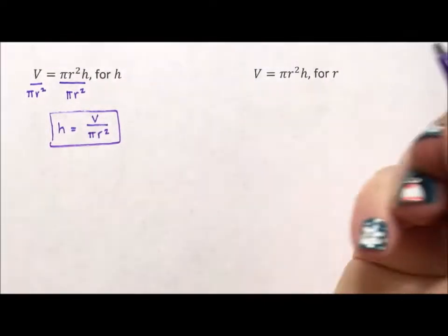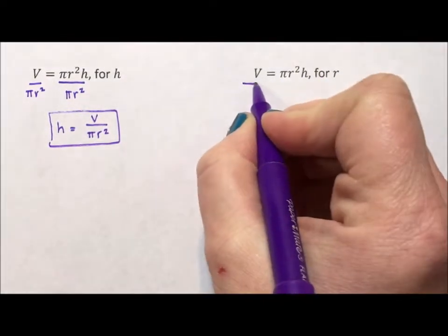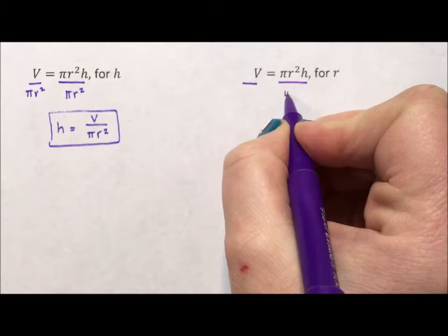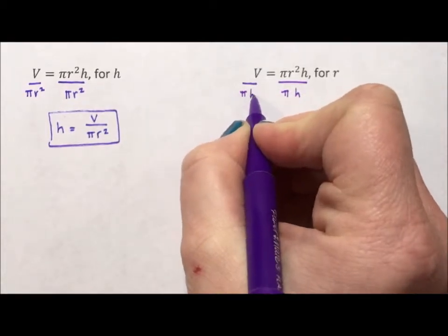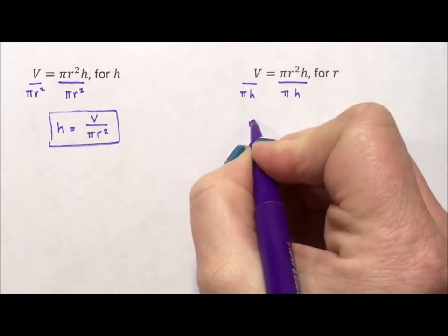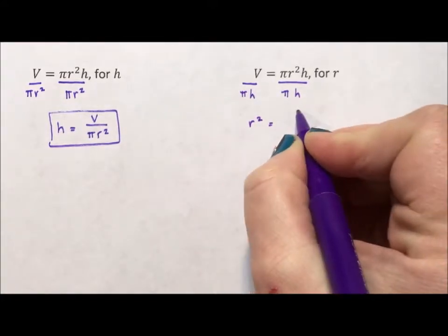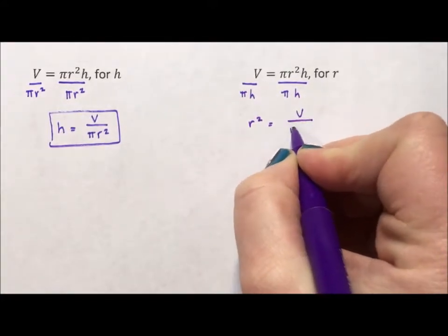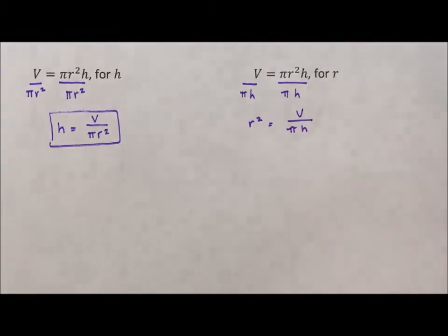For my second one, again, I just need to divide, but in this case, I'm dividing by the pi and the h. And again, I'm going to flip it around, and I'm going to have r squared equals volume divided by pi h. Now, you could say h pi, pi h. It's multiplication. You can go either way.